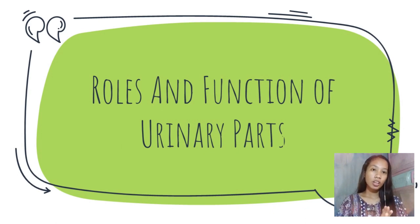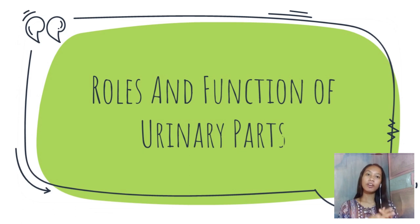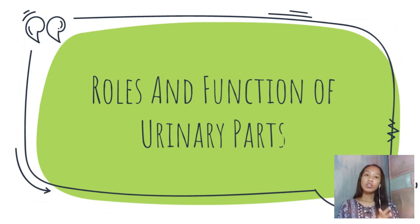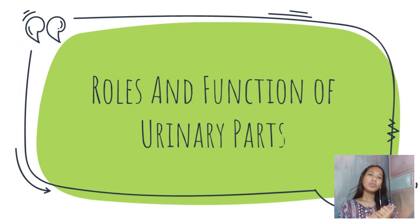Now that we are done talking about how the urinary system works, let's move to the next topic: the roles and functions of each part of the urinary system. The urinary system has four major parts — the kidneys, ureters, bladder, and urethra — and we will now identify the roles and functions of each.